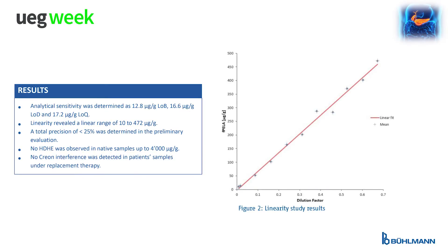Several analytical studies were performed during the optimization phase to evaluate the performance of the assay. Analytical sensitivity was determined and a limit of quantification of 17.2 micrograms per gram was established. A total precision of less than 25% was determined in the preliminary evaluation.